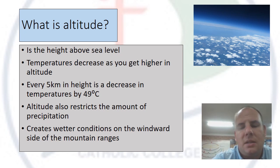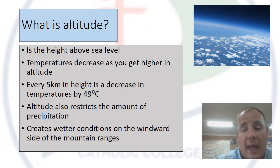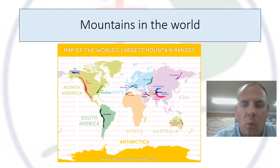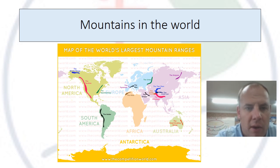This map shows where all the major mountain ranges are in the world. As you can see, they are scattered about. In Australia, we have the Great Dividing Range.